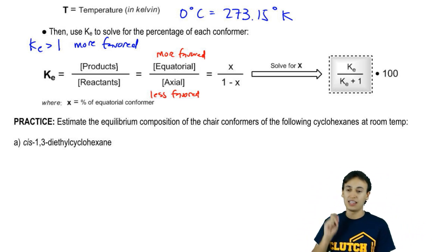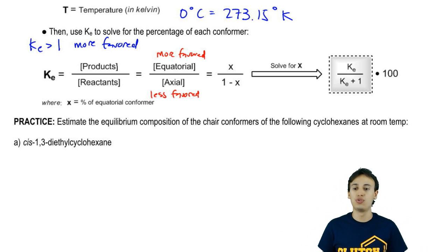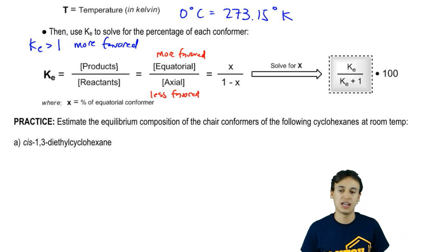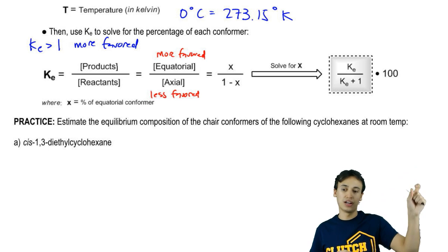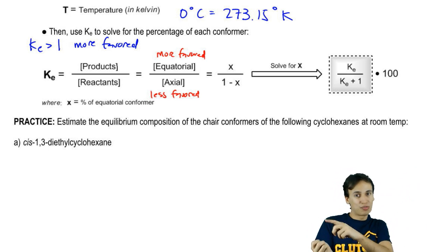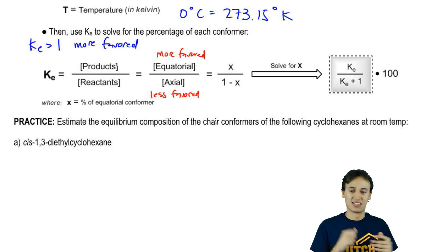Now here it says that KE is equal to x over 1 minus x. And guys, that just has to do with the definition of equilibrium constant, how KE is what you're - x is what you're making, right? That's your product. So then 1 minus whatever you made would be your reactants.